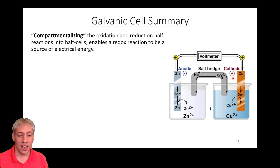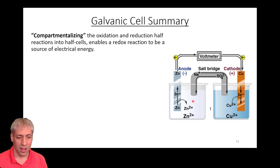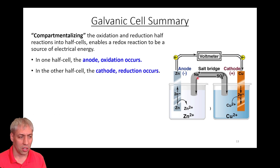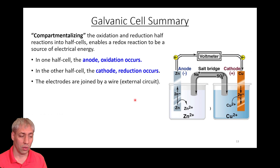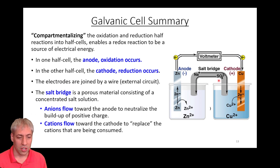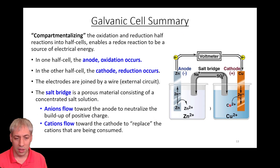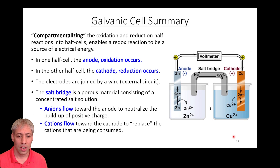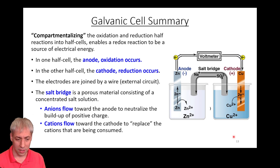Putting it all together: two metals with different potentials are connected by a wire through a voltmeter. A salt bridge balances the charges as the reaction progresses. This is a galvanic cell — it separates the redox event and routes electrons through a wire. We have an anode with the oxidation reaction, a cathode with the reduction reaction, a wire for electron flow, and a salt bridge for charge compensation. The overall reaction is still Zn + Cu²⁺ → Zn²⁺ + Cu, but done in two compartments to generate voltage.